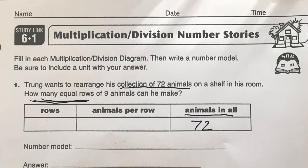So that's what we need to figure out. And then it tells us equal rows of nine animals, so each row is going to have nine animals. And then this is going to be division. So we have 72 divided by 9 is equal to, and I'll let you figure that out.